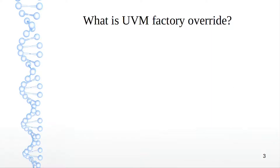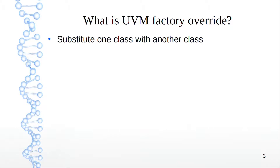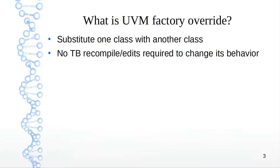This can also be asked as: what are the advantages of factory override, or why do we need to register something to the UVM factory? The answer is that the UVM factory is important because it allows us to substitute one class with another derived class. Critically, it does not require any recompiles or edits of the test bench to achieve a change in behavior — and this change of behavior without any recompiles is a very important advantage of using the factory.